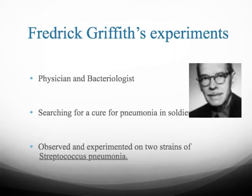The first experiment we're going to talk about is Frederick Griffith's experiment. He was a physician and a bacteriologist. He was looking for a cure for pneumonia in soldiers, and what he observed was that there were two strains of pneumonia. These strains were based on their shape and how they presented themselves when put on a growth media — one was smooth, one was rough. The smooth pneumonia would in fact kill soldiers at a high mortality rate; it was more virulent than the pneumonia cells that had a rough appearance.